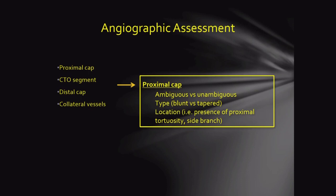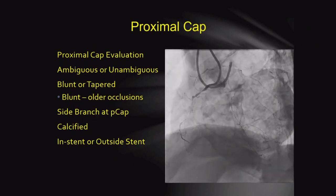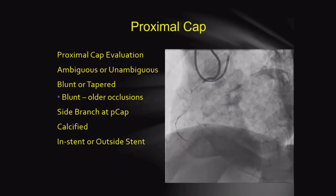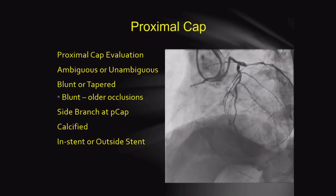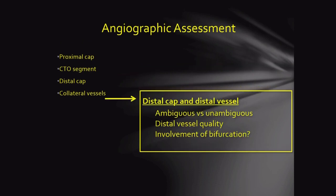For the proximal cap, assess whether it is ambiguous or non-ambiguous, blunt or tapered, and whether there is proximal tortuosity. This is an example of a blunt proximal cap with a side branch of RCA CTO. For the CTO segment: assess course, whether ambiguous or unambiguous, length — more than 20mm is difficult, less than 20mm is easier — plus side branches, calcification, and angulation.